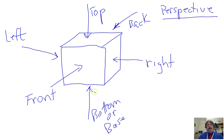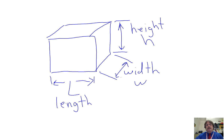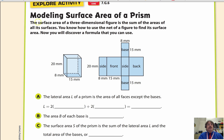You have a top, you have a bottom, and then you have a right-hand side and a left-hand side. To relate that to surface area, we have to identify our dimensions. Across the front, I've labeled this as my length, or L. Going up and down is my height, H. The depth is called width, W. The surface area of a three-dimensional figure is the sum of all the areas of all its surfaces.